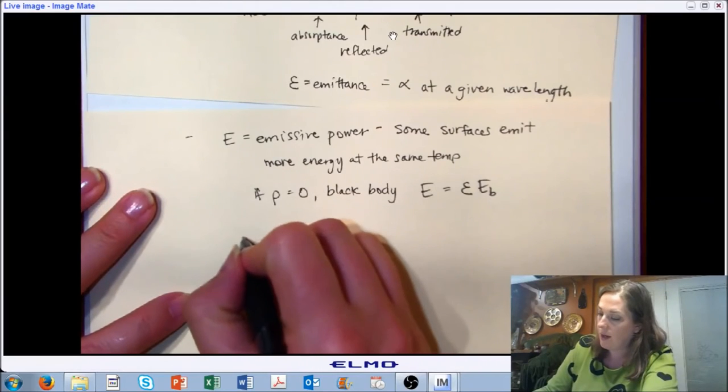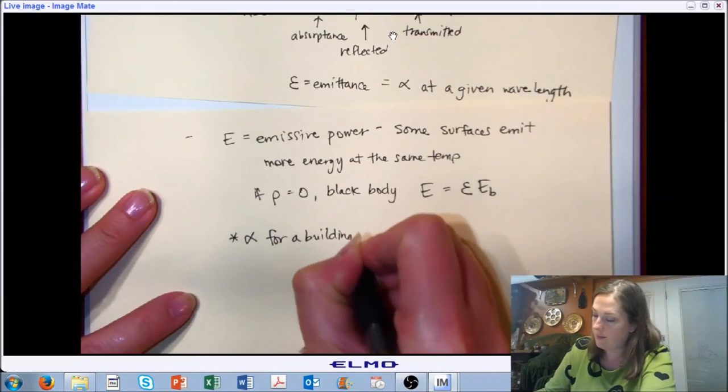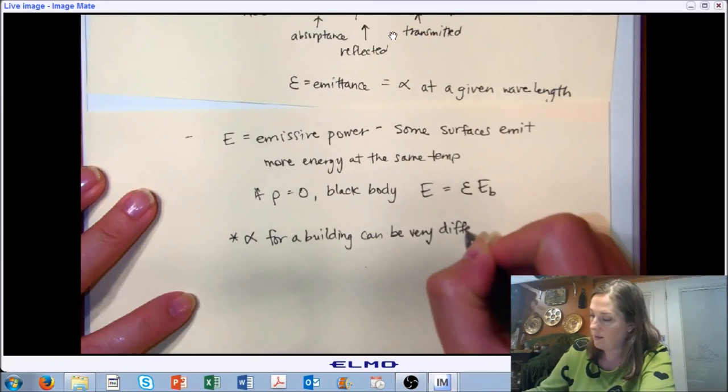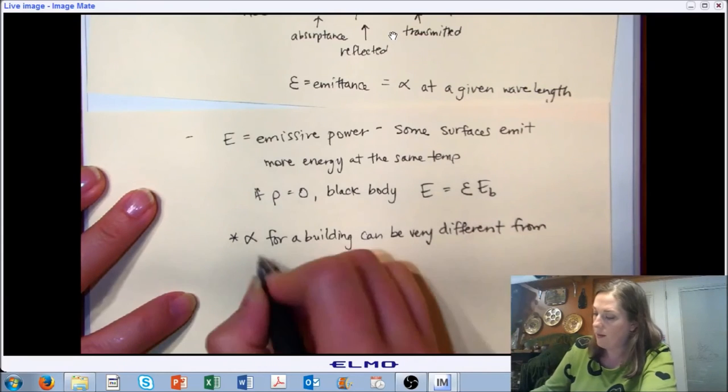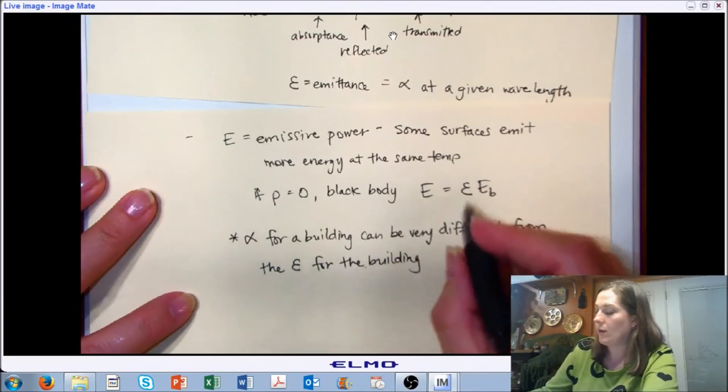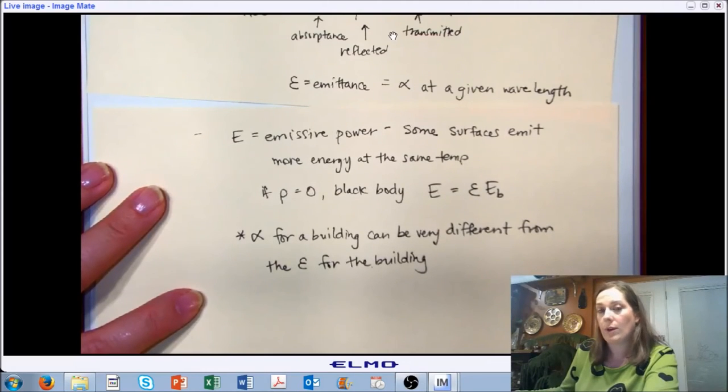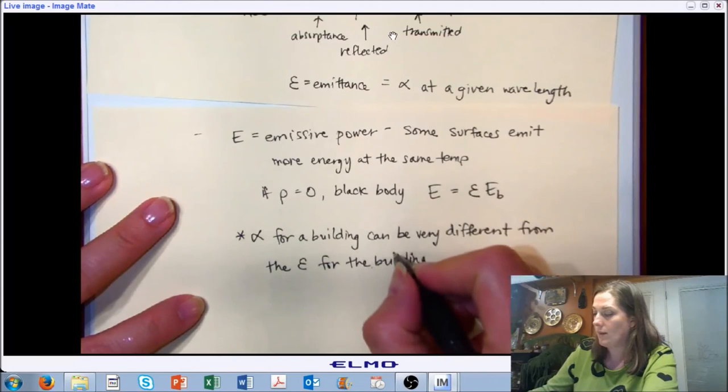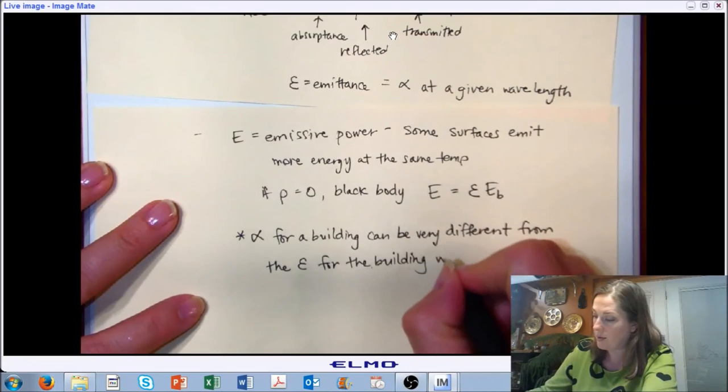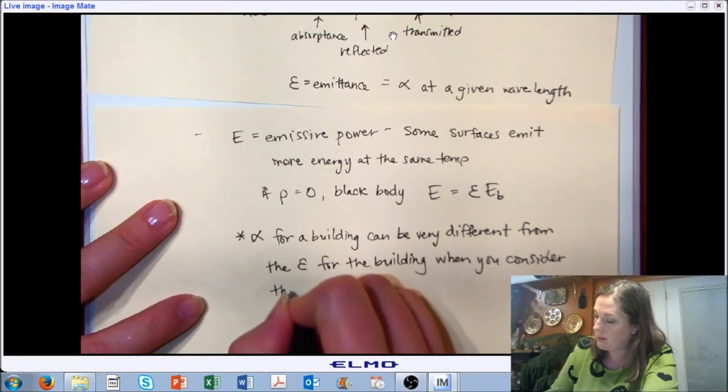One final note here is the absorptance for a building can be very different from the emittance when you consider that you're at two wavelengths. Remember that radiation that's coming from the sun is short wave radiation, and the surface of your building is going to be at a temperature that's going to be primarily long wave radiation. In that case your absorptance and your emittance are in most cases not going to match up. Important to note when we get to a problem like that.